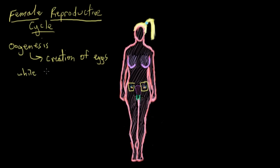Once she grows up and reaches puberty, her reproductive cycle will start, and one egg in her ovaries will mature, or become activated, each month, and that allows it to be fertilized by sperm.